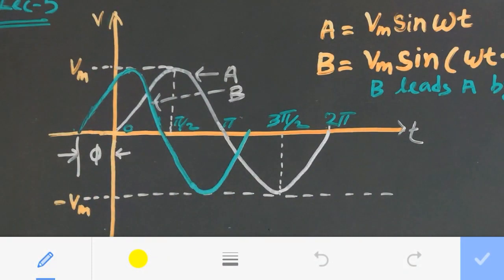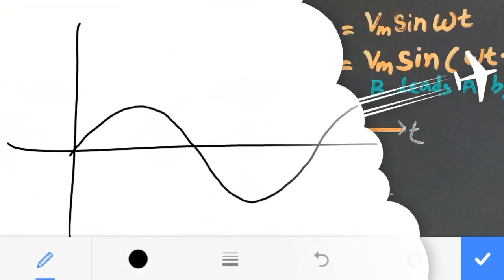Here you can see there are two waveforms. In the white color, it is waveform A, and the green is waveform B. Let us analyze these two.